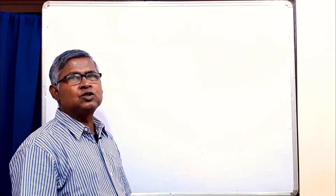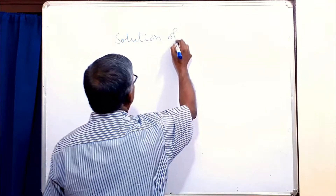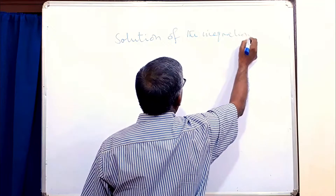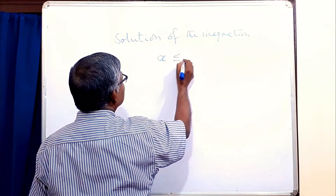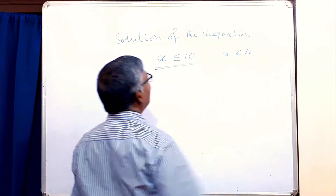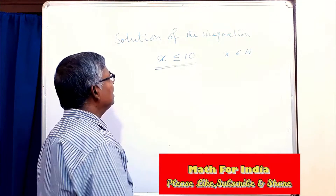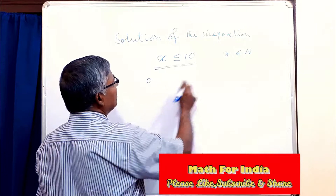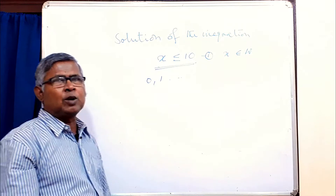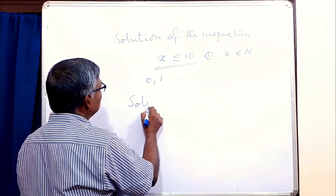Let us learn what is a solution — the solution of the inequation. Suppose x is less than or equal to 10, whenever x belongs to W, that is the whole number. So what is the solution? Here you see zero is a member of this. So in an inequation, a set of values — a set of solutions — are there. This set of solutions is called the solution set.